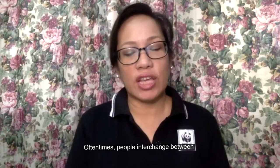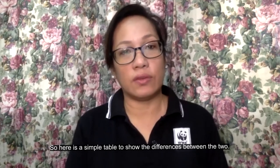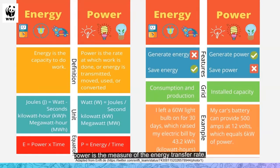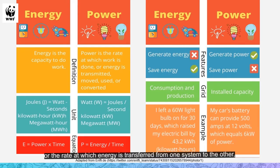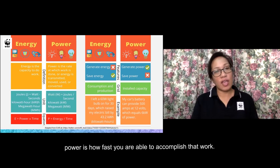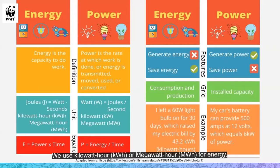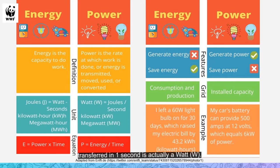People often interchange energy and power. While energy is the capacity to do work, power is the measure of the energy transfer rate — the rate at which energy is transferred, moved, used, or converted from one system to another. In other words, while energy is about the total amount of work, power is how fast you are able to accomplish that work. In terms of units, we use kilowatt-hour or megawatt-hour for energy, while for power we use watts — one joule of energy transferred in one second equals one watt.